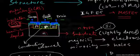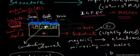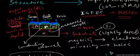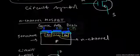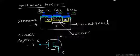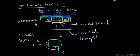One more detail: the channel has a certain length. The channel length is basically the physical distance between the two heavily doped p-type regions in the case of the p-channel MOSFET. Similarly, in the case of the n-channel MOSFET, the channel length is the physical distance between the two heavily doped n-type regions on the substrate.